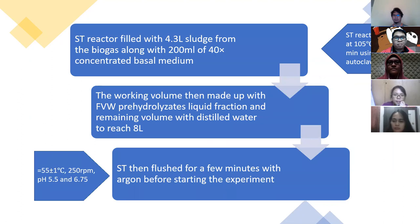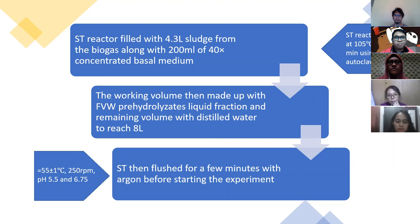The first step is a steel reactor filled with 4.3 L of sludge from the biogas plant along with concentrated basal medium. Then the working volume was made up with the fruit and vegetable waste, spray-hydrolyzed liquid fraction, and the remaining volume with distilled water to reach one litre. Then the steel reactor was flushed for a few minutes with argon.